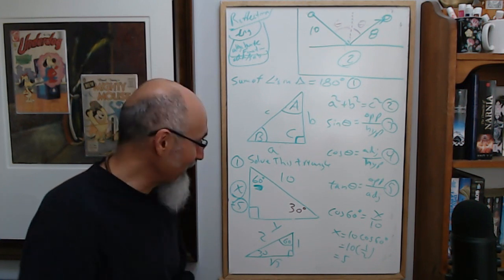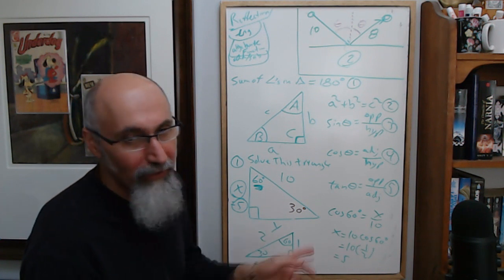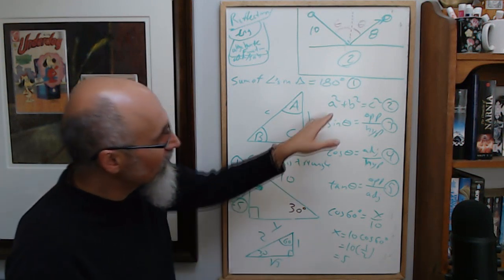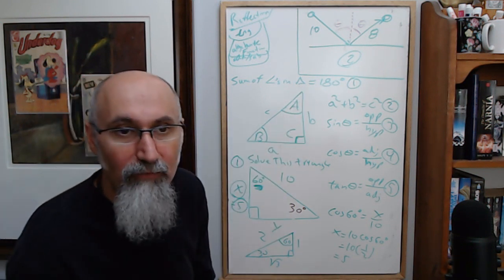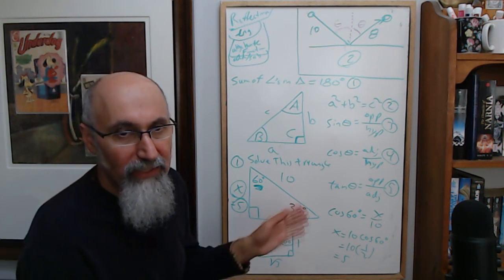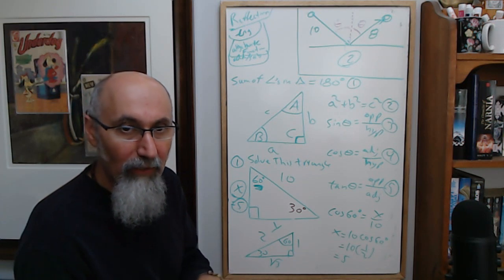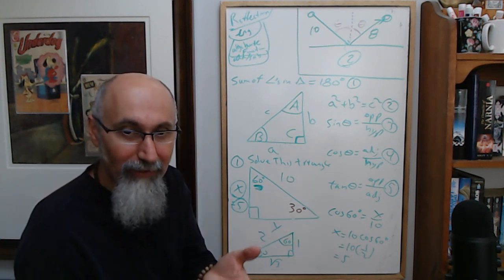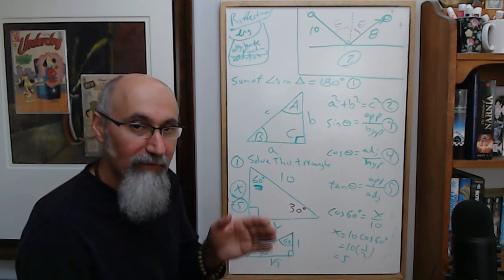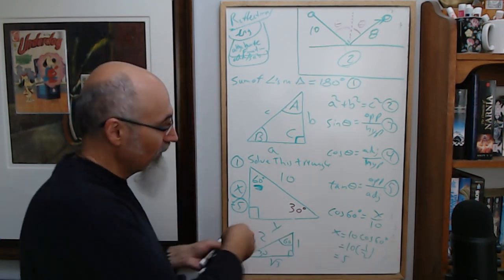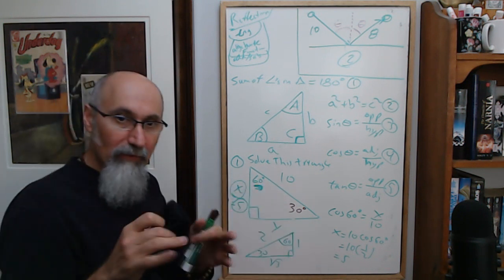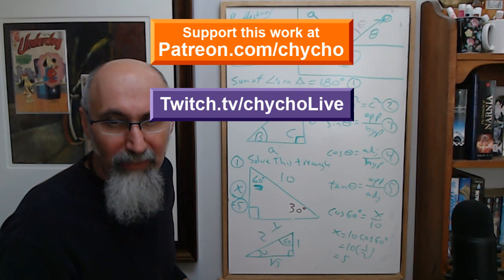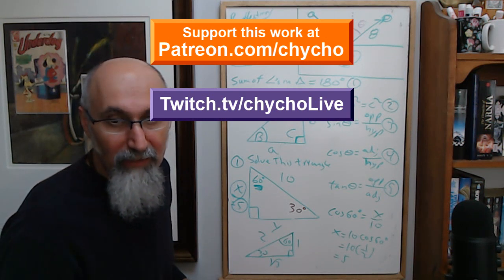Trigonometry is ridiculously important. Once you know how to use SOHCAHTOA, the Pythagorean theorem, and the sum of angles equals 180 degrees, you'll ace two months of grade 8 and 9 math. You're set up for math 11 and 12, and you begin to have a way better appreciation for what all of this means — it's ratios of one side relative to another side.